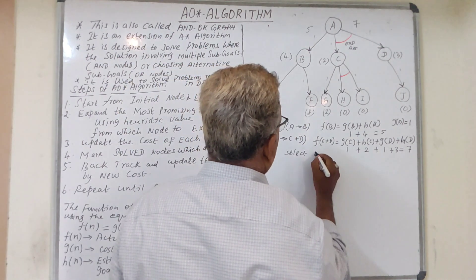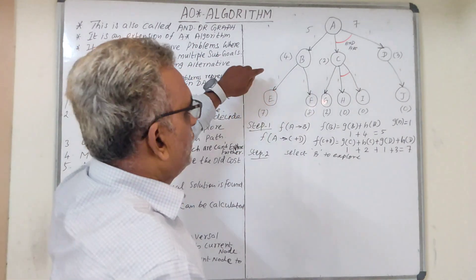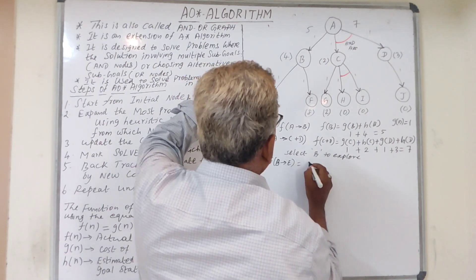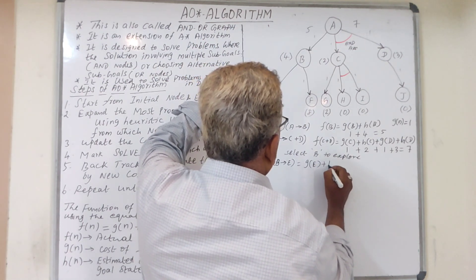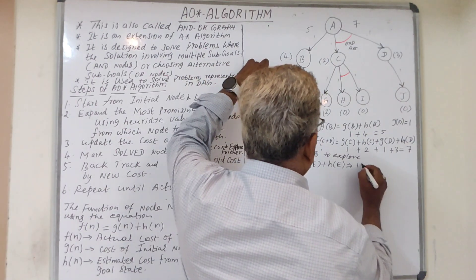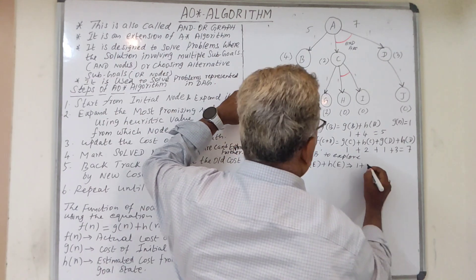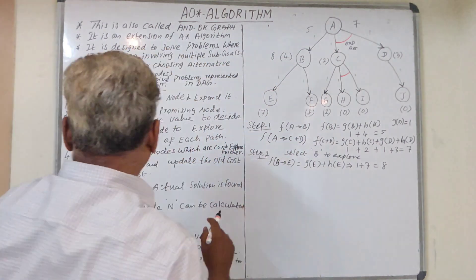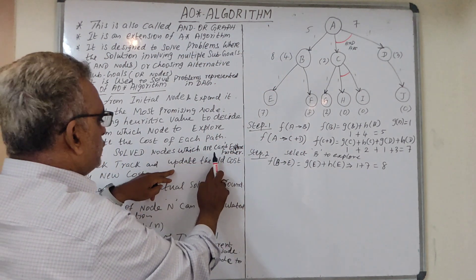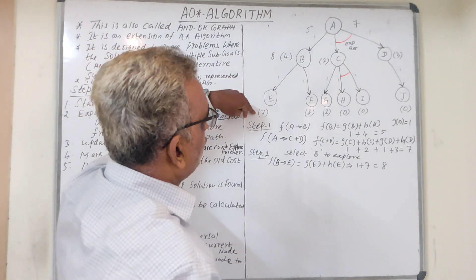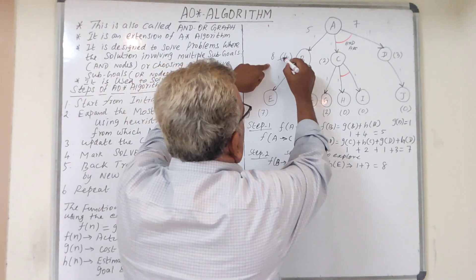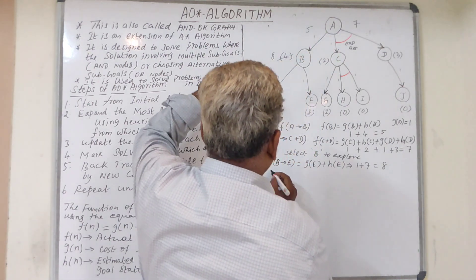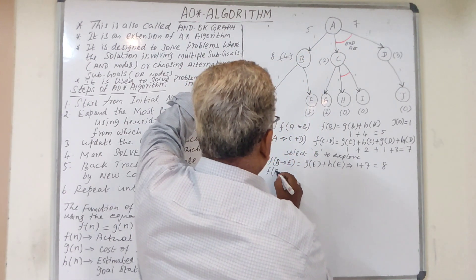Step 2: Select B to explore. From B we have node E. f(B to E) = g(E) + h(E) = 1 + 1 + 7 = 8. This new value must be updated. Not only that — this new value affects the cost of A to B as well, so we have to recalculate A to B with the new cost.